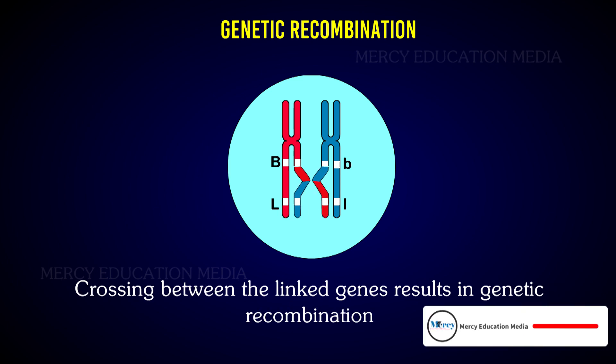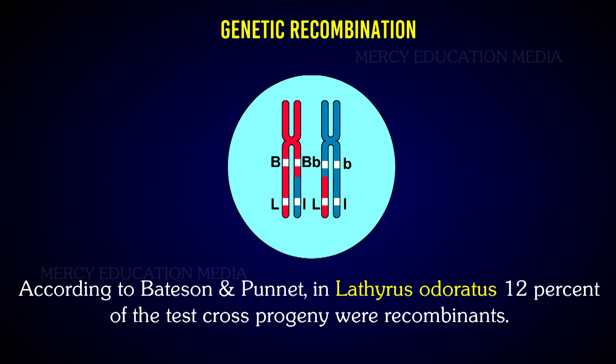The crossing between the linked genes results in genetic recombination. According to Bateson and Punnett, in Lathyrus odoratus, 12% of the test cross progeny were recombinants.